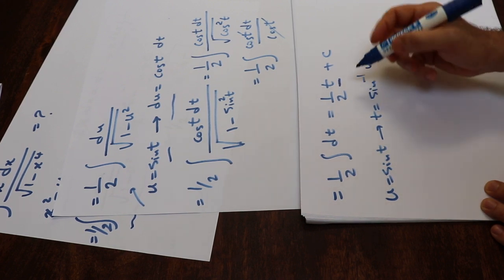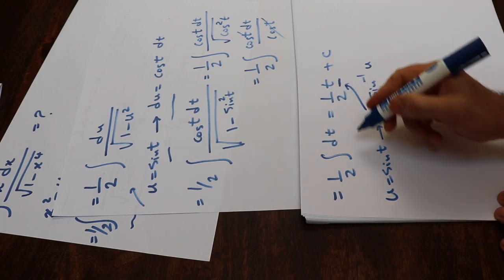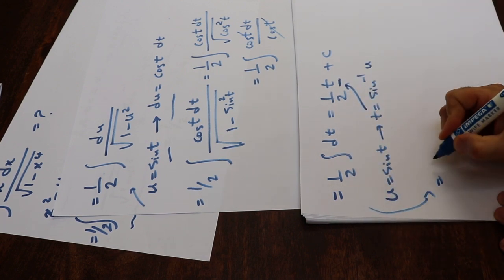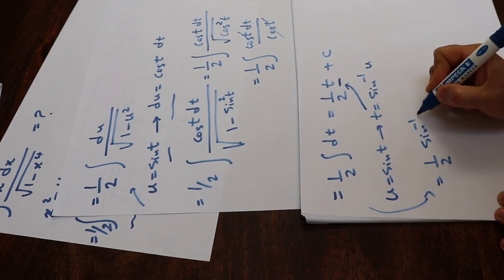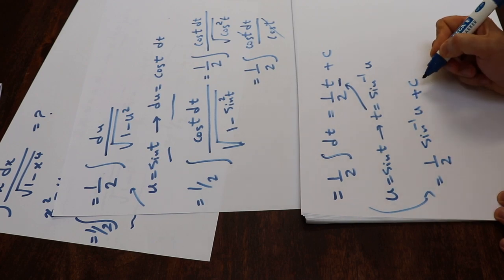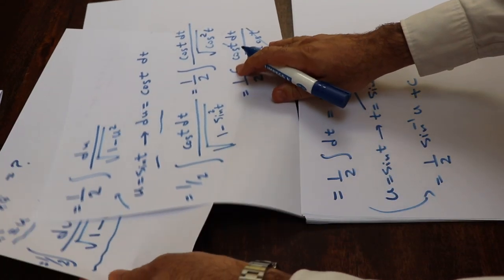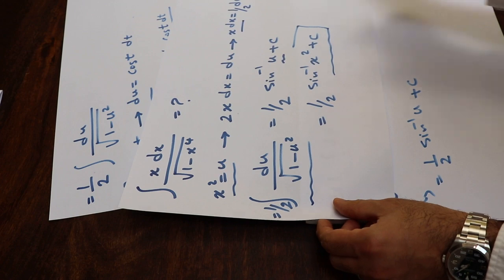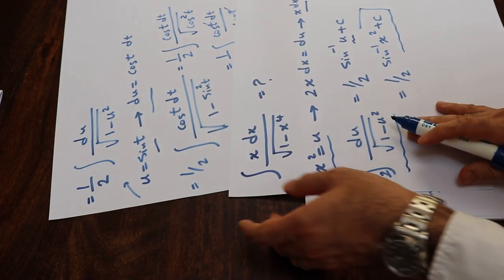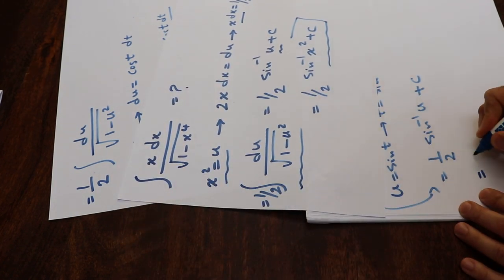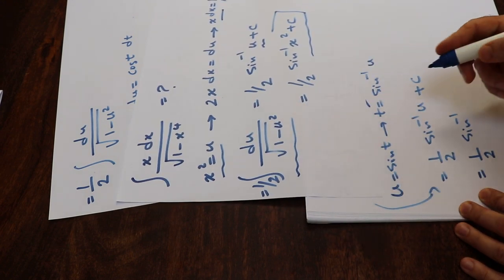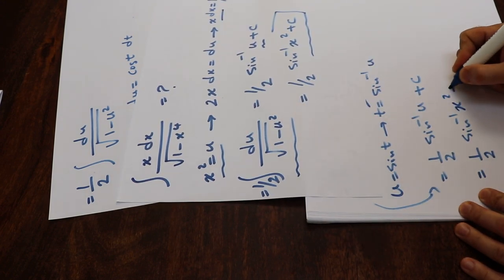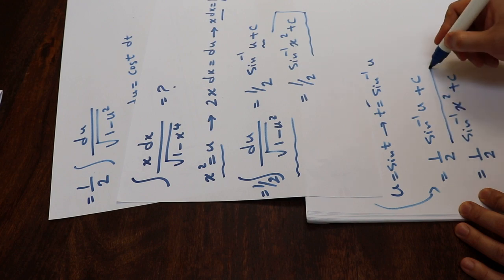So you substitute this expression back. This gives 1/2 times arcsin(u) plus C. And remember, u was defined from the very beginning as x², so this becomes 1/2 arcsin(x²) plus C. And that's the solution to this integral.